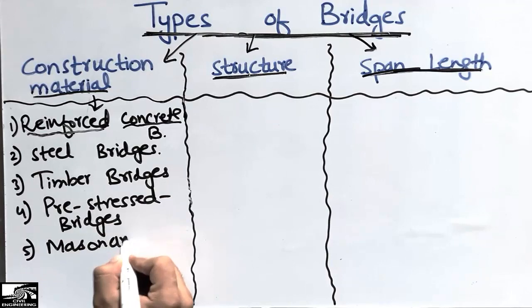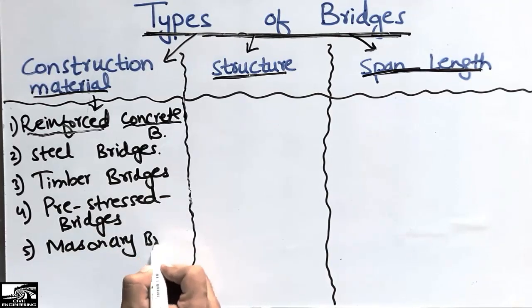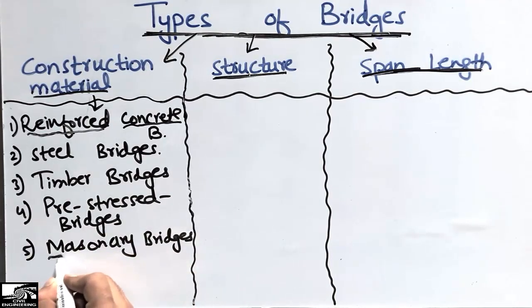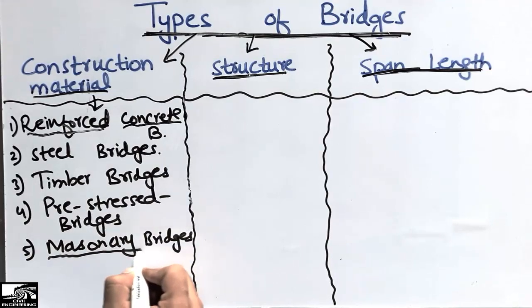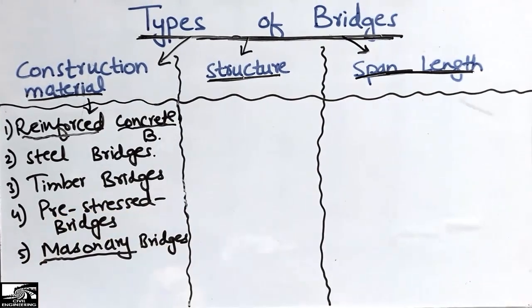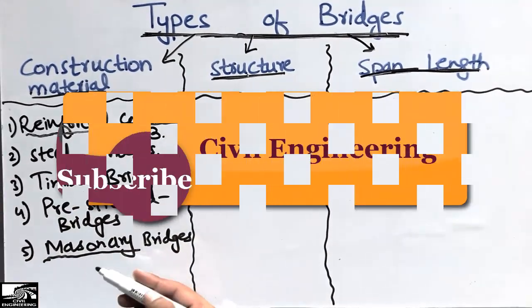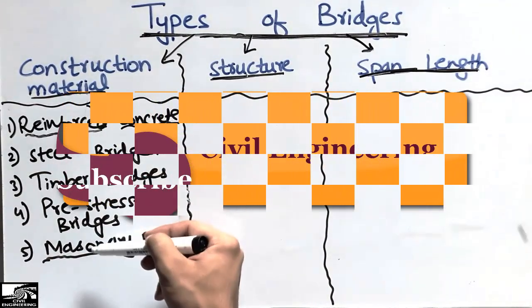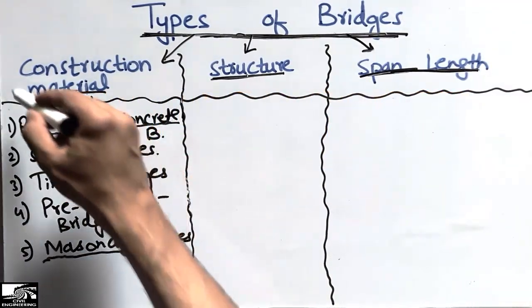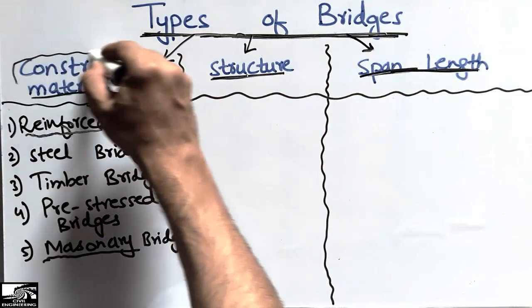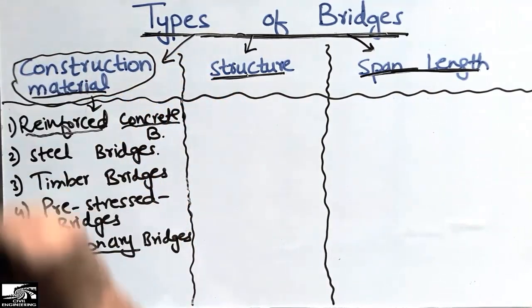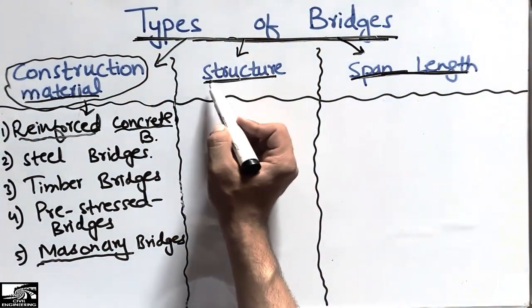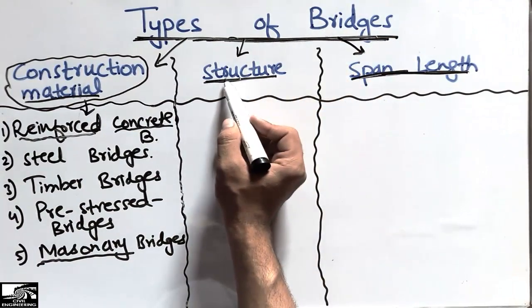The fifth one is masonry bridges. Masonry bridges are those bridges which are made up of masonry as the construction material. So we call these masonry bridges. There are five sub-classifications of bridges under the category of construction material bridges. Now coming to the classification of bridges according to structure.